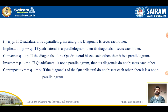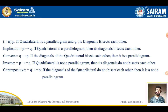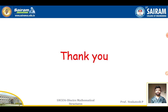For problem 3, let P be 'quadrilateral is a parallelogram' and Q be 'its diagonals bisect each other'. Implication: If a quadrilateral is a parallelogram, then its diagonals bisect each other. Converse: If the diagonals of a quadrilateral bisect each other, then it is a parallelogram. Inverse: If a quadrilateral is not a parallelogram, then its diagonals do not bisect each other. Contrapositive: If the diagonals do not bisect each other, then it is not a parallelogram. Thank you.